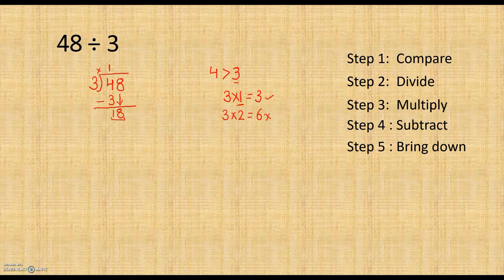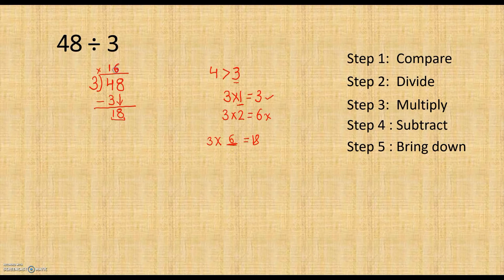Now we follow the same steps from step 1. In step 1 we compare — 18 is greater than 3, so we go to step 2. In step 2 we divide — 3 times which number gives 18? Three times 6 gives 18, so we write 6 in the quotient. In step 3 we multiply quotient with divisor — 6 times 3 gives 18, so we write 18 below. Then we subtract — 18 minus 18 equals 0.